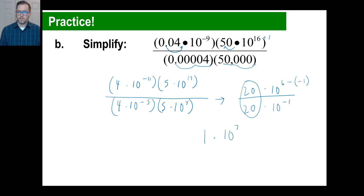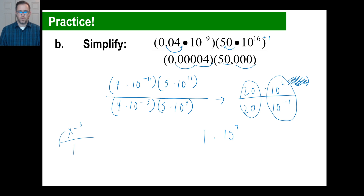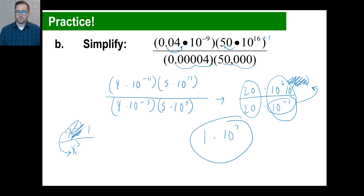By the way, if you forget how to handle dividing with negative exponents, remember: x to the negative 3 in the denominator can be rewritten as x to the positive 3 in the numerator. Same thing here — if you move 10 to the negative 1 from the denominator to the numerator, it becomes 10 to the positive 1. So 10 to the 6th times 10 to the 1st is 10 to the 7th — same answer as always. Okay, have a great day, see you all next time.